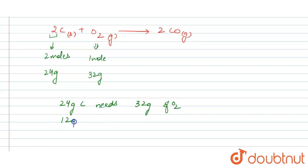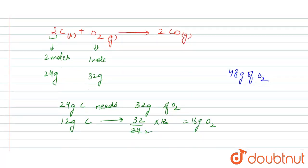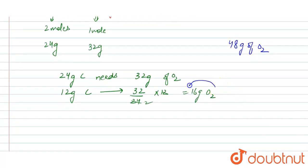So 12 gram of carbon will require 32 divided by 24 into 12, which will be equals to 16 gram of oxygen. But in the reaction 48 gram of oxygen is given. We need only 16 gram of oxygen. So O2 will be the reactant which remains in excess at the end of the reaction.